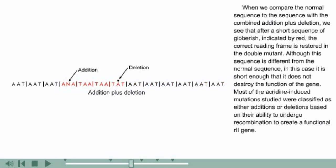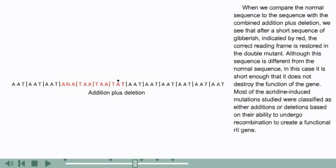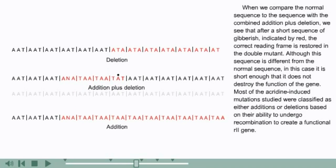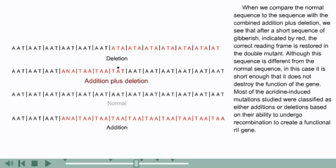When we compare the normal sequence to the sequence with the combined addition plus deletion, we see that after a short sequence of gibberish, indicated by red, the correct reading frame is restored in the double mutant. Although this sequence is different from the normal sequence, in this case it's short enough that it does not destroy the function of the gene.